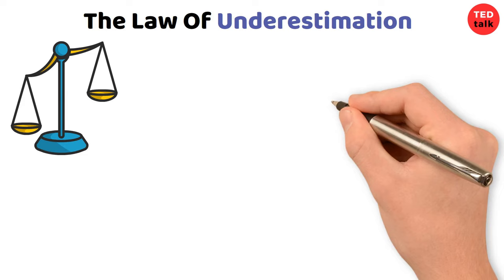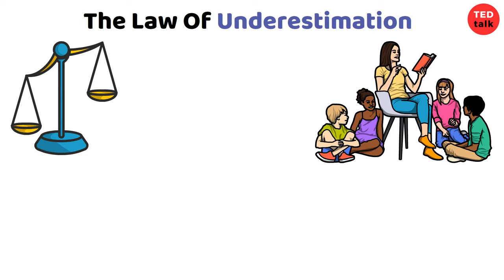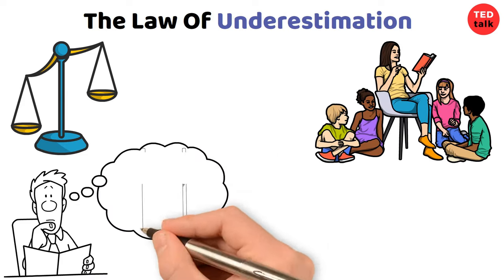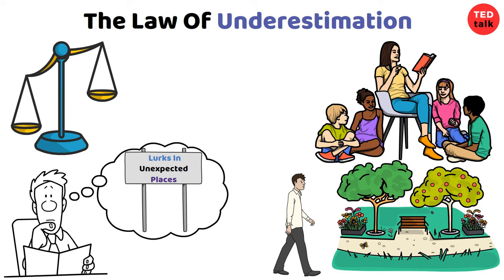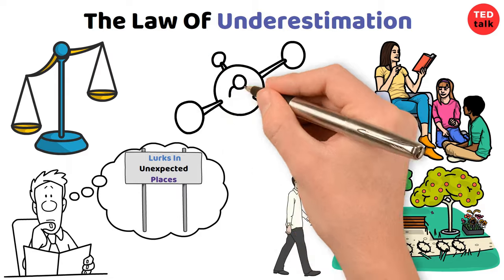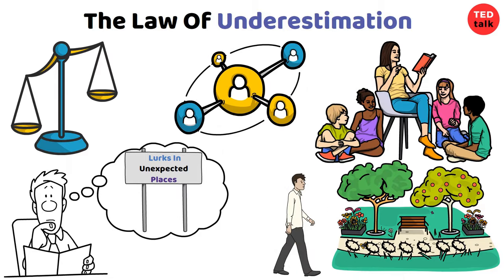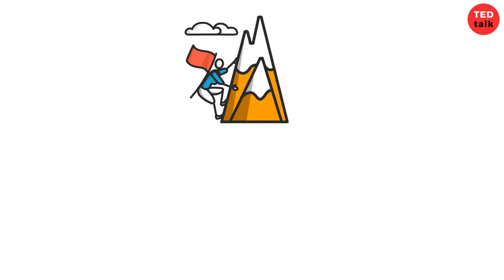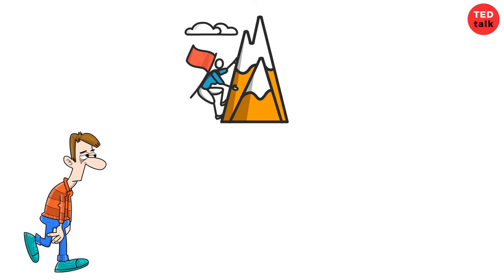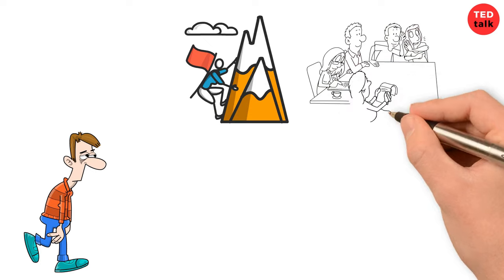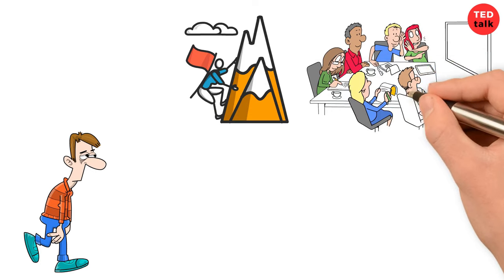The law of underestimation serves as a cautionary tale, reminding us that folly often lurks in unexpected places. It's like walking through a field of wildflowers where beauty abounds, but thorns lie in wait beneath the surface. Similarly, in the vast landscape of human interaction, there are complexities and nuances that defy our attempts at categorization. Consider a workplace scenario where colleagues collaborate on a project.